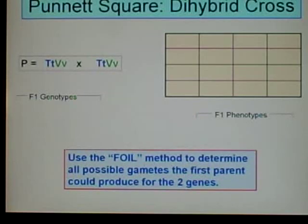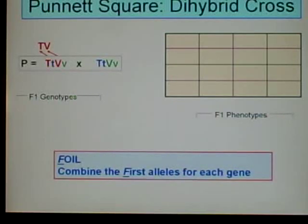We'll use the FOIL method to determine all possible gametes the first parent could produce for the two genes. The letters stand for first, outer, inner, and last. It's very similar to when you multiply two binomials in algebra. Here, we're not actually multiplying, we're just doing combinations.